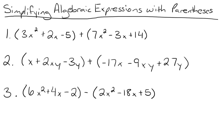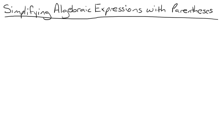Before we do that, let's review what like terms are. Like terms are any two terms that have the same variable raised to the same exponent. Some examples of like terms are x squared and 7x squared.